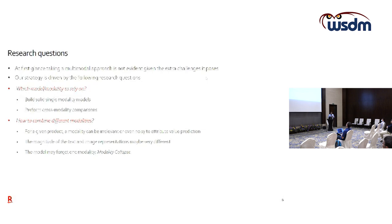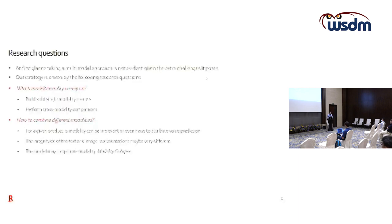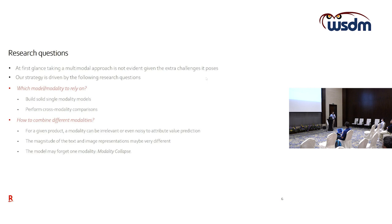The second research question — if the answer to the first is positive — is how to combine the modalities into a unified architecture. There are several aspects to consider: for a given item, one modality can be more relevant than the other; the magnitude of textual and image representations can be very different, posing technical challenges; and lastly we can face what we refer to as modality collapse, where a multimodal architecture ends up ignoring one of the modalities.